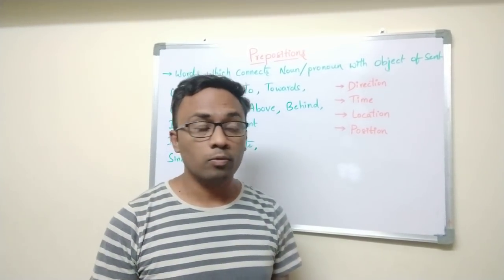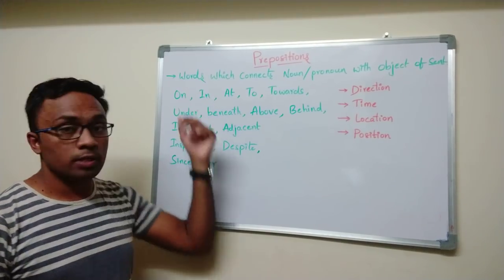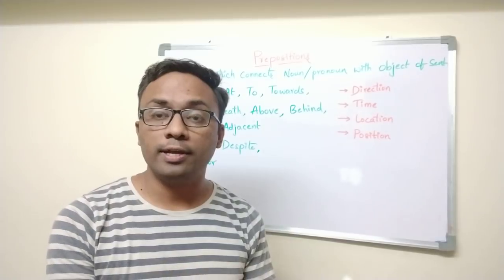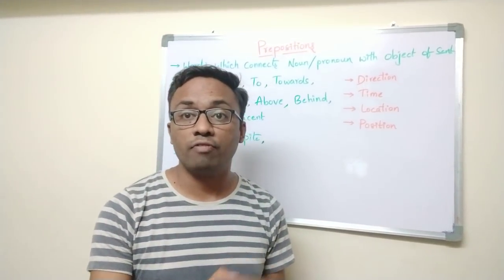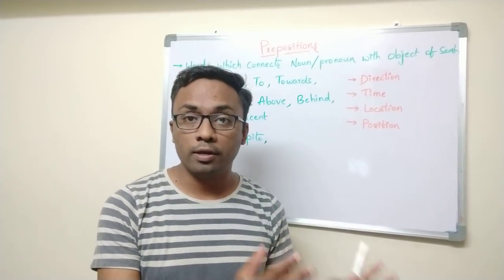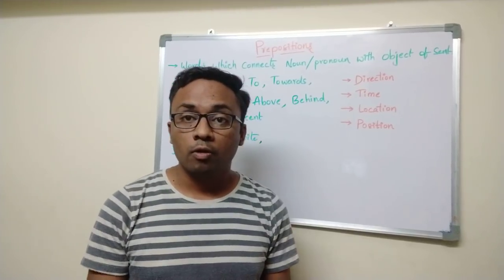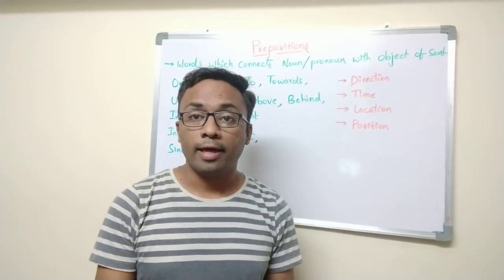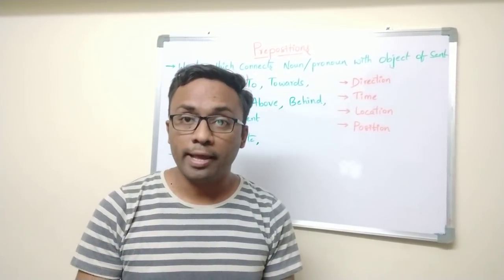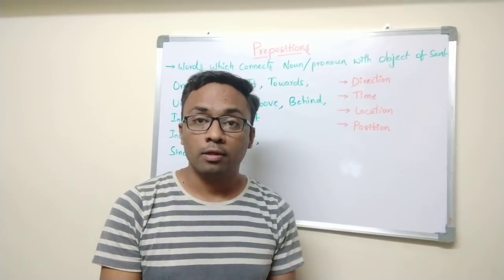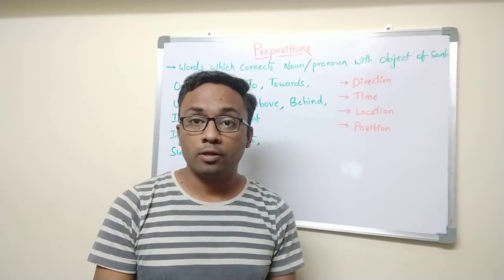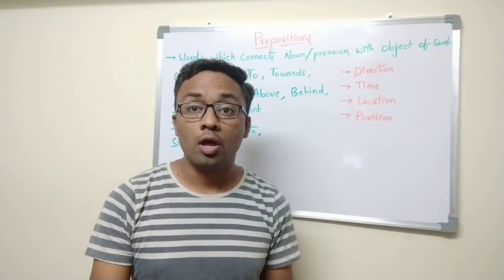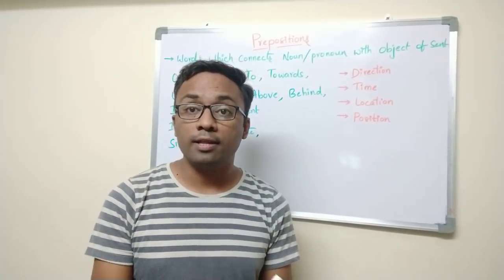Now 'on' is, obviously, the pen is kept on the table. So you are defining the surface. This is one usage. Now when are you coming? I am coming on Monday. Very tricky one. Like, this is summer and ice creams are on demand. Ice creams are on demand, so that is telling the position.